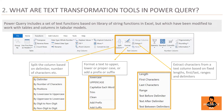Question number 2: What are text transformation tools in Power Query? Power Query includes a set of text functions based on a library of string functions in Excel, but which have been modified to work with tables and columns in tabular models. Some important and notable text transformation tools are Split Column, Format, and Extract. These functions allow you to transform text as needed. For example, if a name like "John Doe" is in lowercase and the analyst wishes to convert it to uppercase, go to Format and select the Upper Case function — the output would be "JOHN DOE" in uppercase.